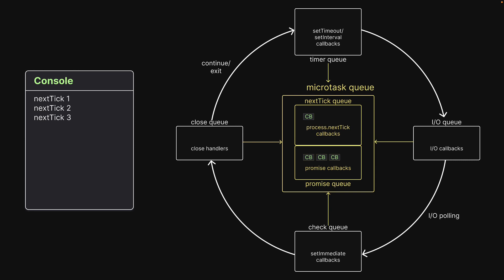Initially there were only 3 callbacks, but the second callback added another callback to the queue. The event loop will push the inner nextTick callback and the console.log statement is executed. Hopefully the first 4 log statements make sense.